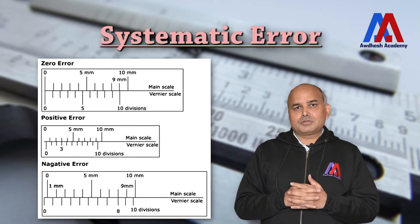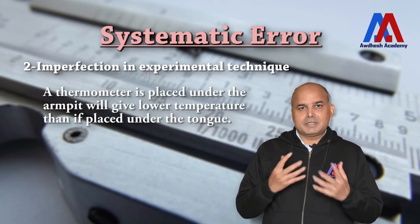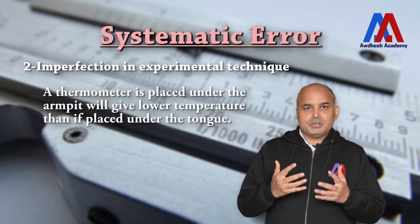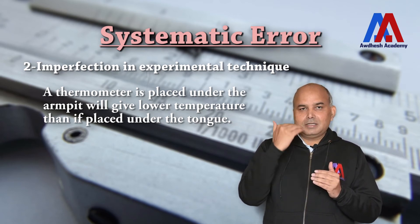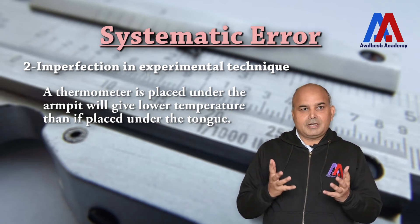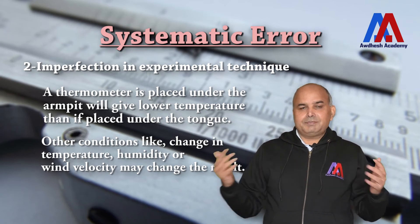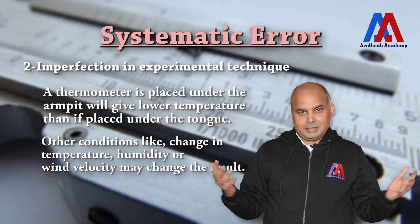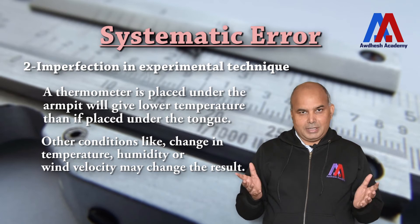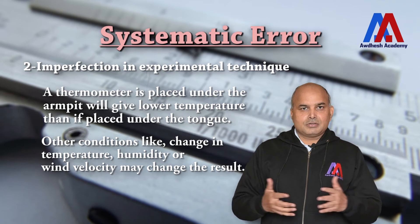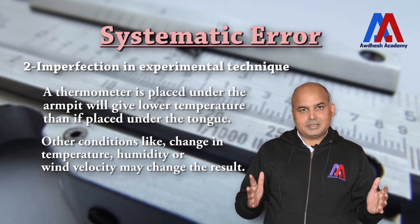The second important source of systematic error is using the wrong experimental technique. For example, to measure body temperature we put the thermometer under the tongue, but if placed under the arm the temperature will be lower. Similarly, when measuring the speed of sound, if there is wind blowing in the same direction as the sound, the measured speed will be higher; if opposite, it will be lower. So not accounting for wind speed will introduce error into the measurement.